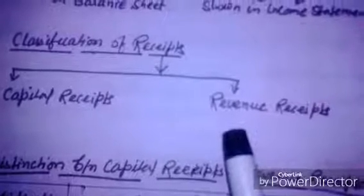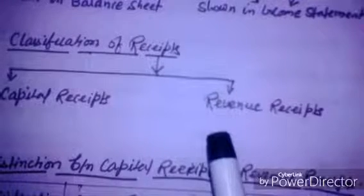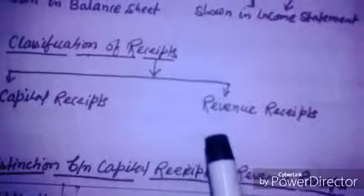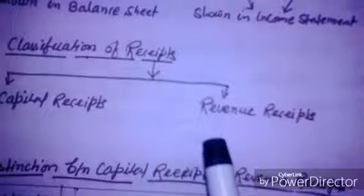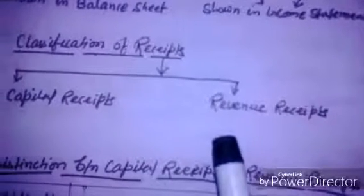Fourth, revenue receipts are shown in the profit and loss account to calculate the income of the accounting period. This means that revenue receipts are set off against revenue expenses to calculate the profit or loss of the business in an accounting period. Fifth, revenue receipts do not create any liability.